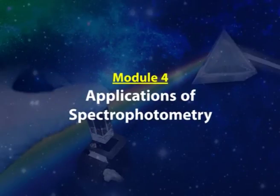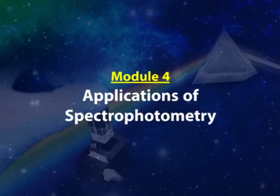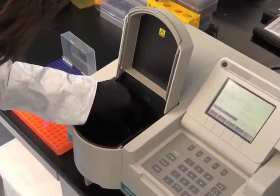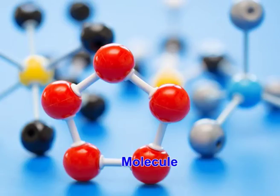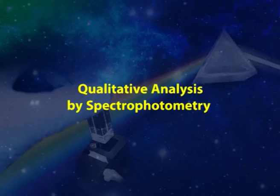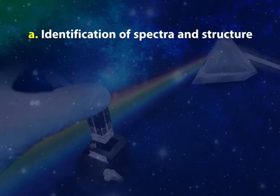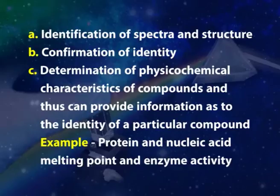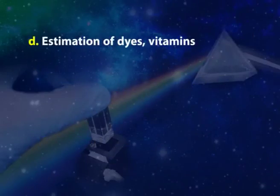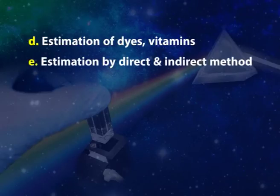Coming to Module 4, Application of Spectrophotometry. Spectrophotometry finds broad application in various fields. They are used for both qualitative and quantitative estimation of drugs, molecules, chemical compounds, and complex mixtures. Qualitative analysis by spectrophotometry includes: A. identification of spectra and structure; B. confirmation of identity; C. determination of physicochemical characteristics of compounds, providing information as to the identity of a particular compound — for example, protein and nucleic acid melting point and enzyme activity; D. estimation of dyes and vitamins; E. estimation by direct and indirect methods.